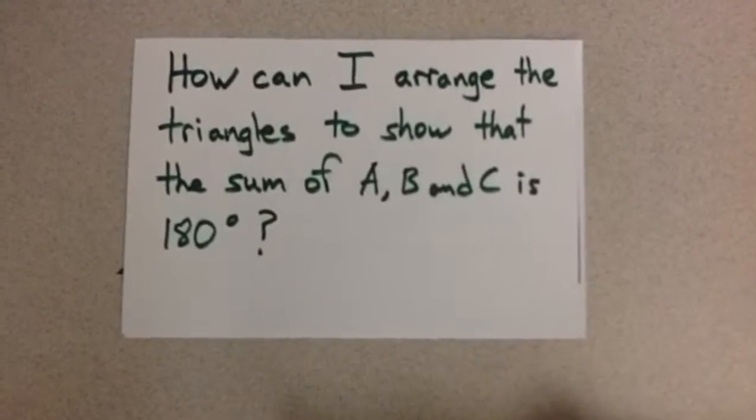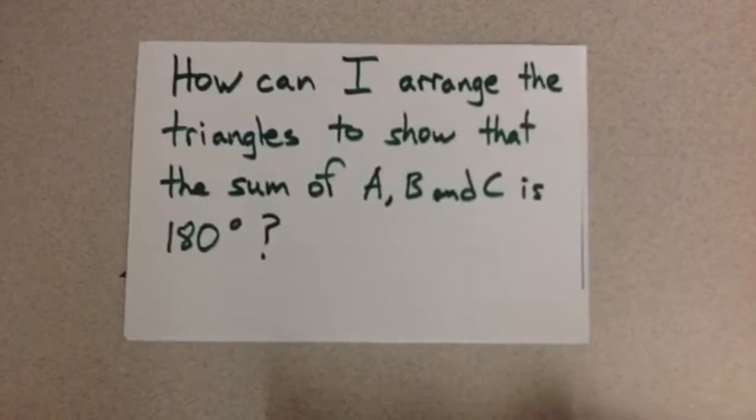How can I arrange the triangles to show that the sum of angle A, B, and C is 180 degrees? Hmm.